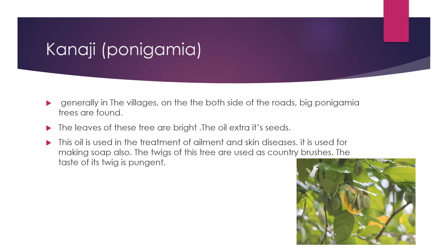The next one is kanaji or ponigamia. Generally, in the villages, on both sides of the roads, big ponigamia trees are found. The leaves of this tree are bright. The oil is extracted from its seeds and used in the treatment of ailments and skin diseases. It is used for making soap too. The twigs of this tree are used as country brushes. The taste of the twig is pungent. Those who use this brush have clean, healthy and strong teeth and gums. Many diseases of teeth are cured by using this country brush.